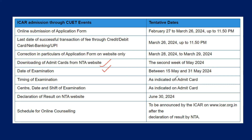The timing of the examination will be indicated on the admit card, so the examination timing will be displayed only on the admit card. The center, date, and shift of examination will also be indicated later on the admit card. Declaration of result on the NTA website will be on June 30th, 2024.